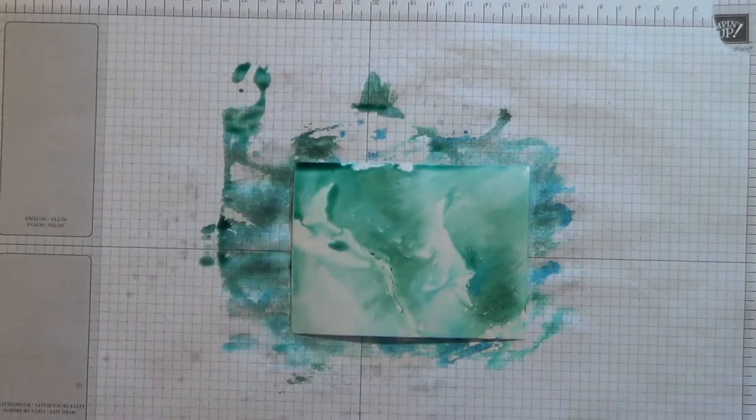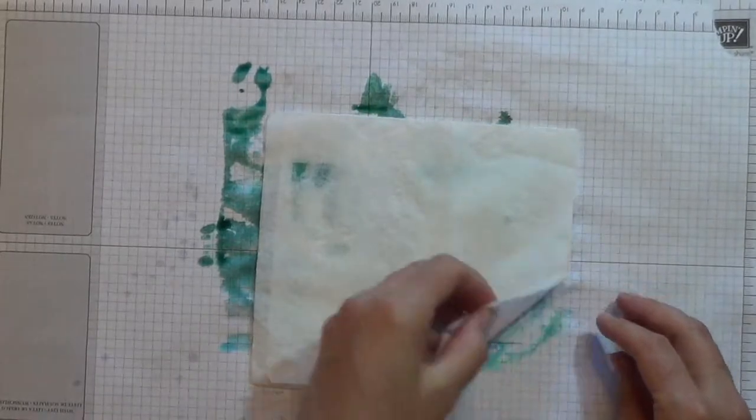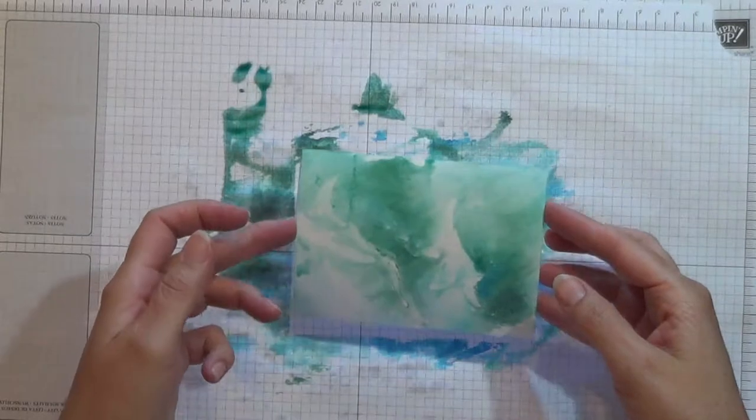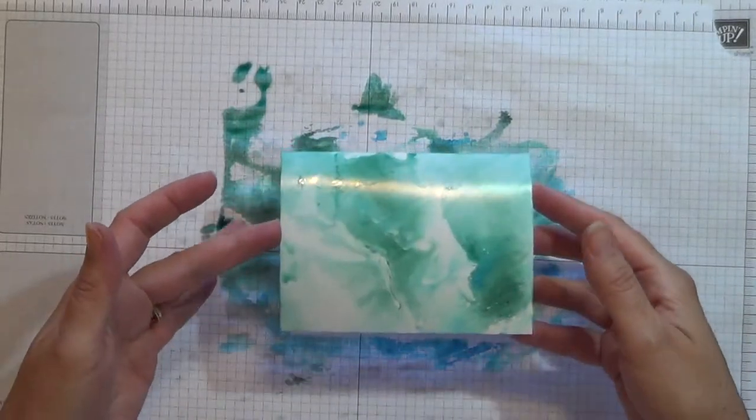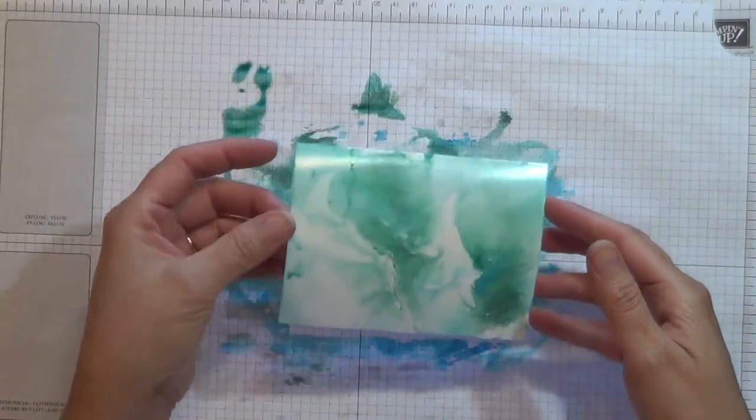And then just use, I'm going to use some napkins here to just dab off some extra water. You don't have to dab off the water, but I like to do that just because I want to move on faster. So there is my finished item. And you just have to let this dry for a little bit. Just set it aside and let it dry. And then you can make your card once it is dried.